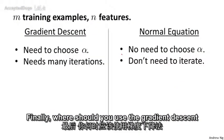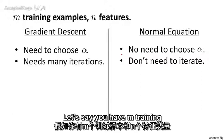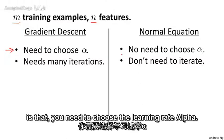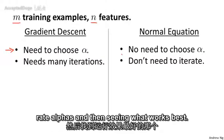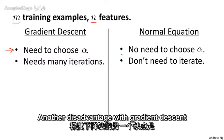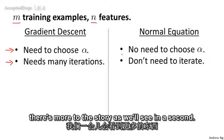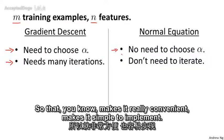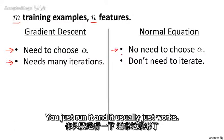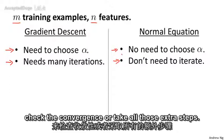When should you use gradient descent and when should you use the normal equation? A disadvantage of gradient descent is you need to choose the learning rate alpha, often requiring multiple runs to find what works — extra work and hassle. It also needs many iterations, which can make it slower. For the normal equation, you don't need to choose any learning rate alpha — it's simple to implement, you just run it and it usually works, with no need to iterate, plot J of theta, or check for convergence.